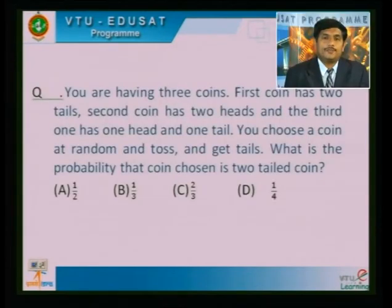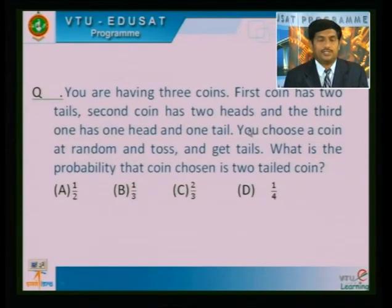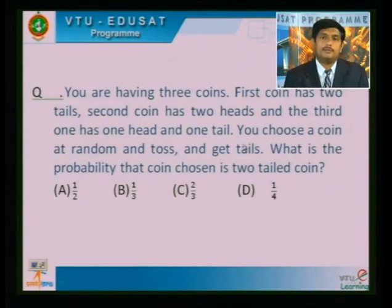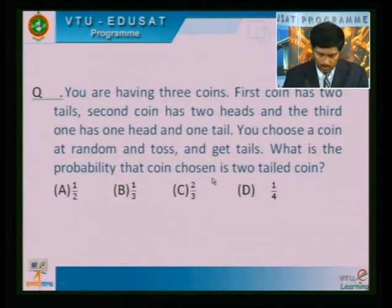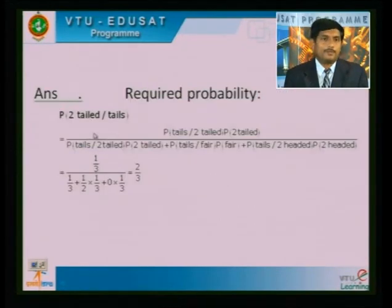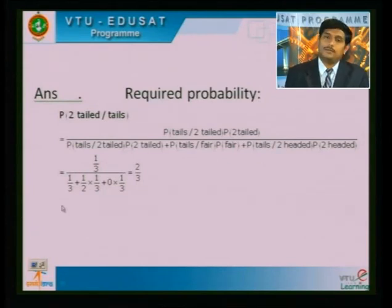You have three coins: the first coin has two tails, the second coin has two heads, and the third one has one head and one tail. You choose a coin at random, toss it, and get tails. What is the probability that the coin chosen is the two-tailed coin? Using Bayes' theorem, the solution is 2/3.